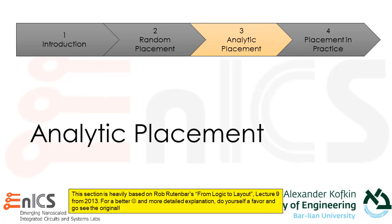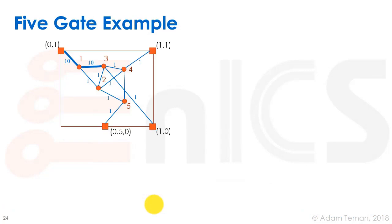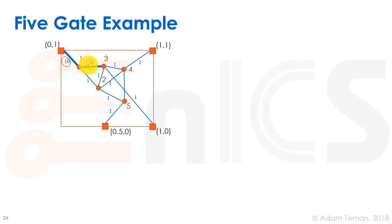That may have been hard to perceive without seeing an example, so let's look at a five-gate example. We're given four pads scattered around with constant positions, and one through five gates numbered accordingly. We have different weights — these blue things — including a large weight of ten here. It's really hard to guess what the placement will be, so let's try to do our analytic placement.